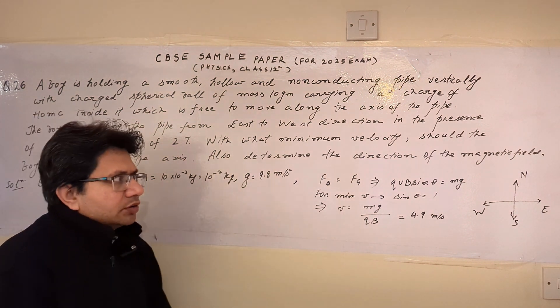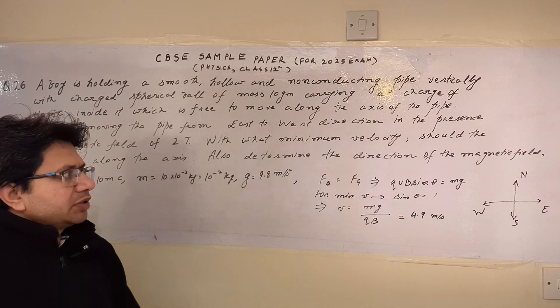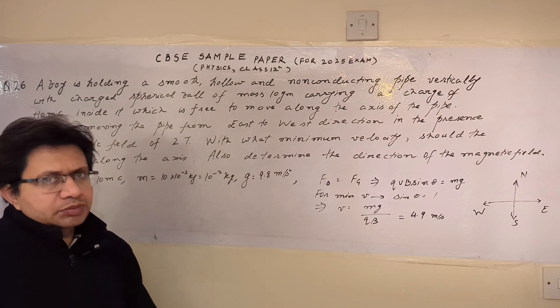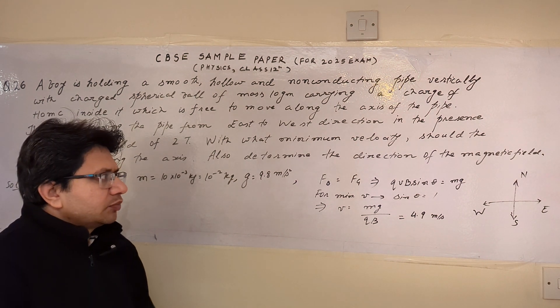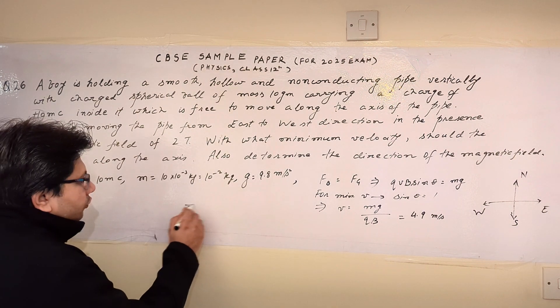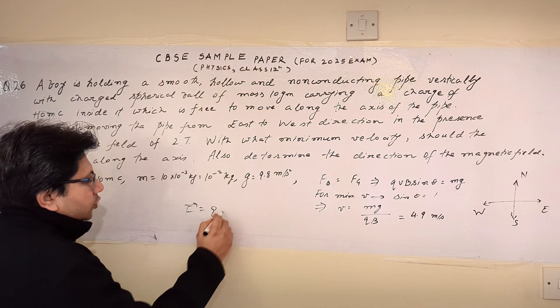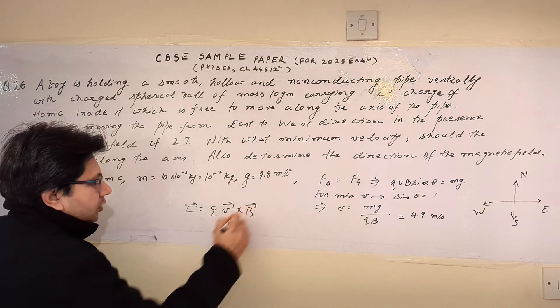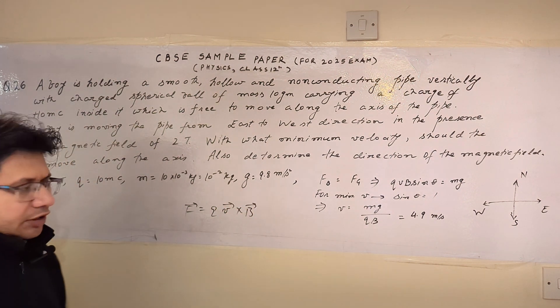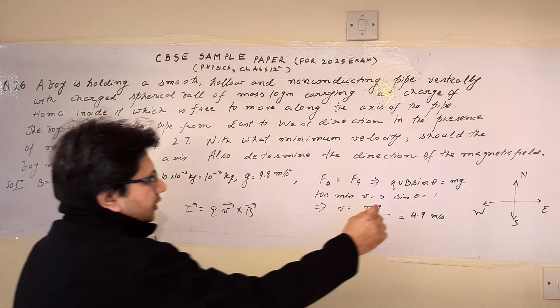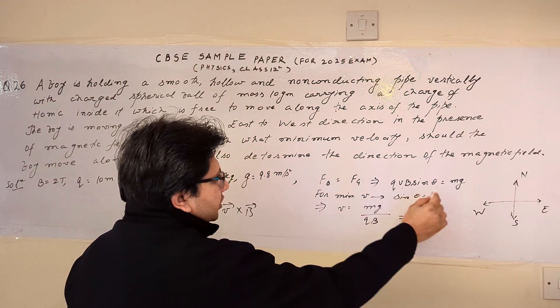So the problem is based on the topic magnetic field, a charge placed in the magnetic field and the force experienced by the charge in the magnetic field. We know that the formula for the calculation of force is given by q v cross B. So this is the formula in the vector form and we can write it as q v B sin theta.